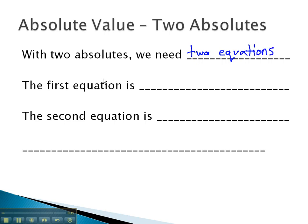To set this up, the first equation is the same as the problem with no absolutes. This considers the option where both absolutes simplify to the same number.